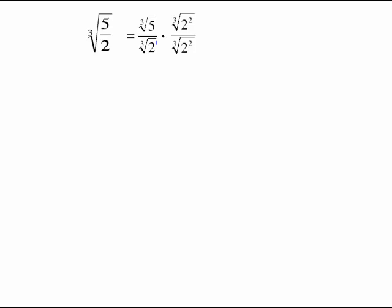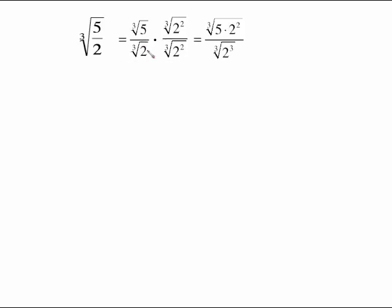And of course because you multiply by the cube root of 2 squared on the bottom you must do it on the top. So what it looks like now bottom-wise, exponent law says 2 times 2 to the second is 2 to the third. So it's the cube root of 2 to the third.